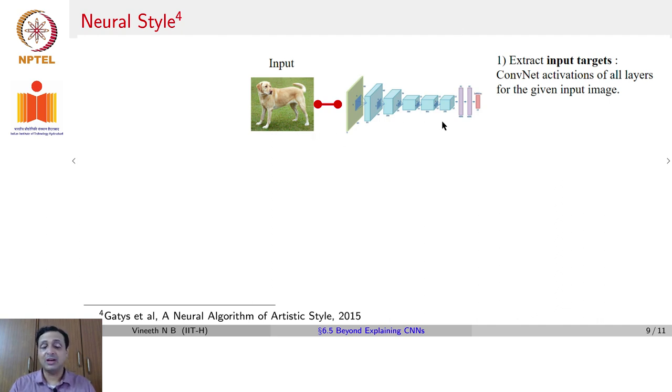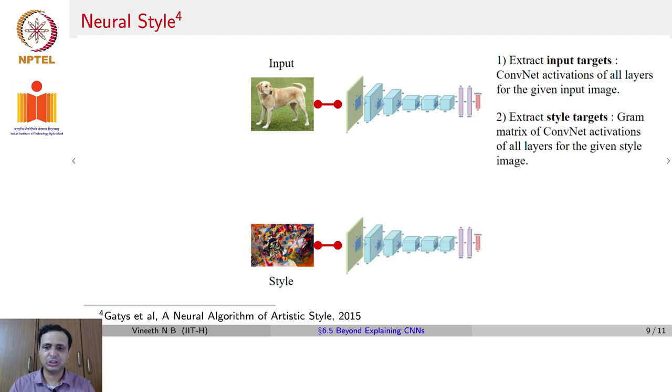Once again, you have a trained AlexNet model. Remember, in the scope of this entire week, we already have a pre-trained model, we are not training the model in any way, we are only working with the trained model in different ways. You provide the input image that you want to your network, and you extract the activations at different layers for the given input image.